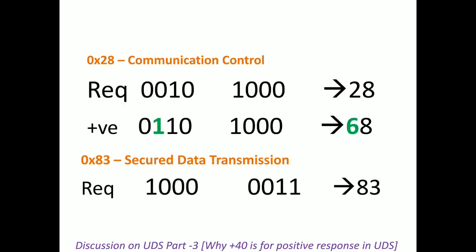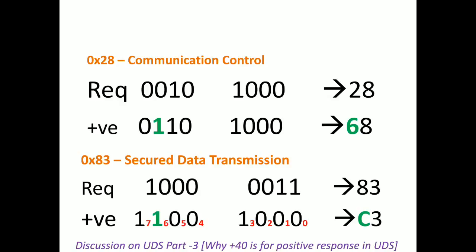This next example is Secured Data Transmission, service ID 0x83. For 8 in binary: 1000. For the positive response, the 6th bit should be 1, so the binary becomes 1100 0000 — giving us 0xC3. This is the logic behind why 0x40 has been added.